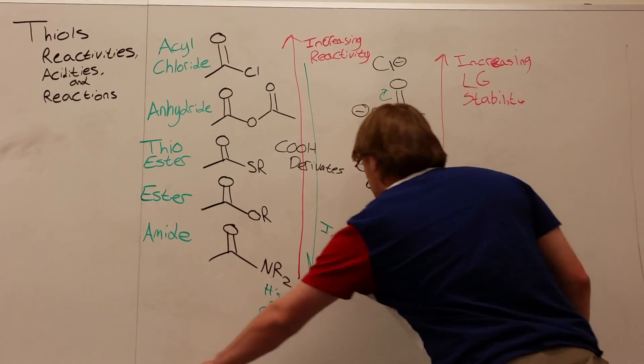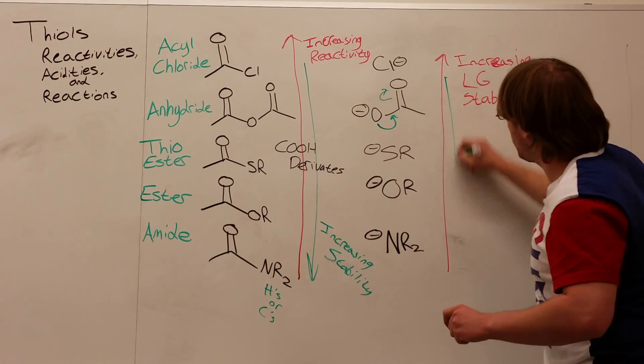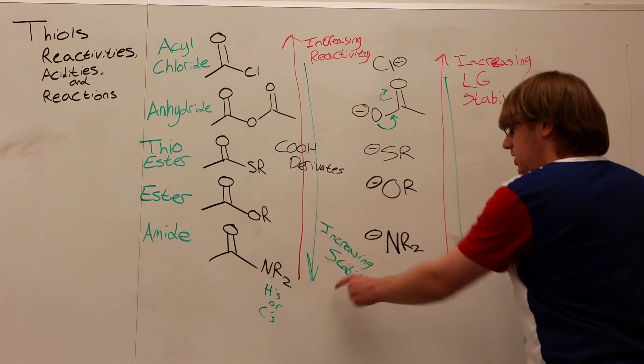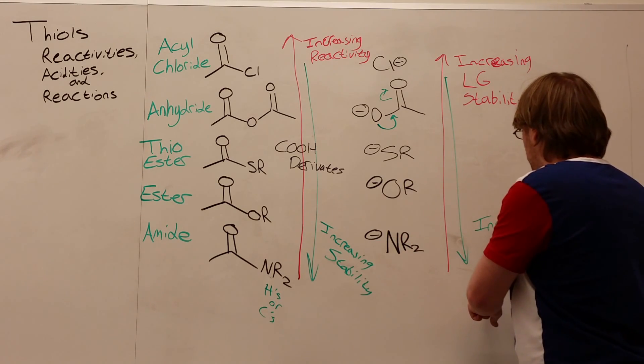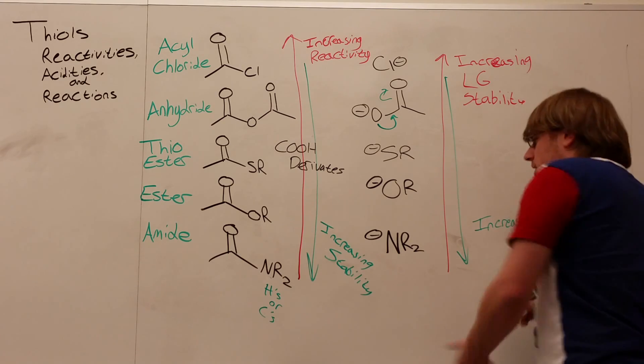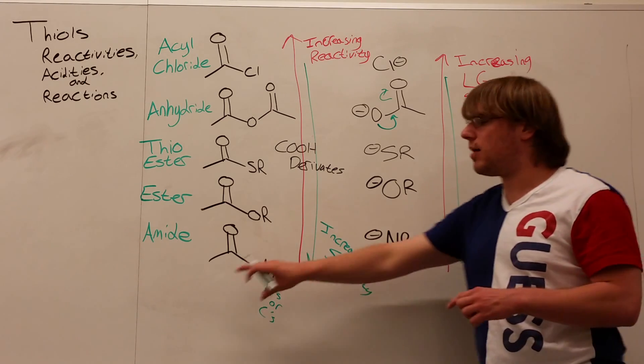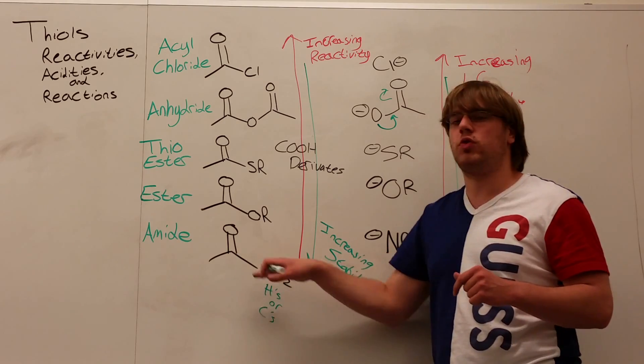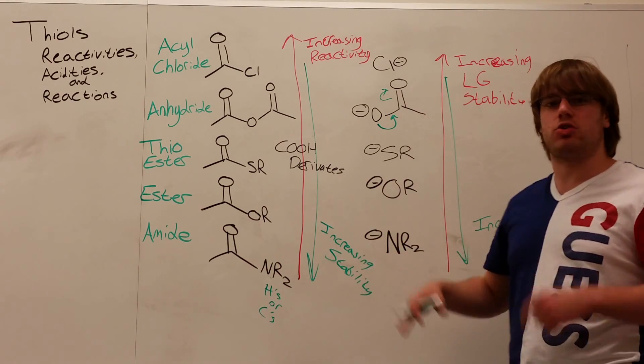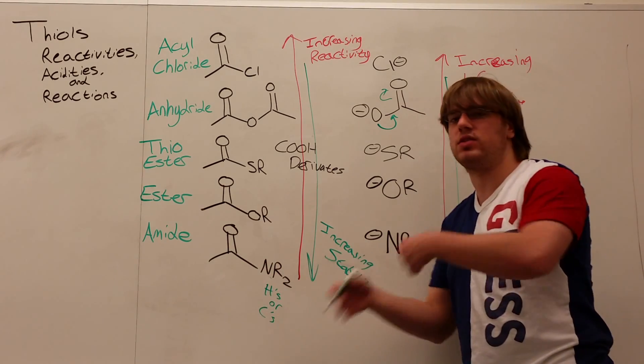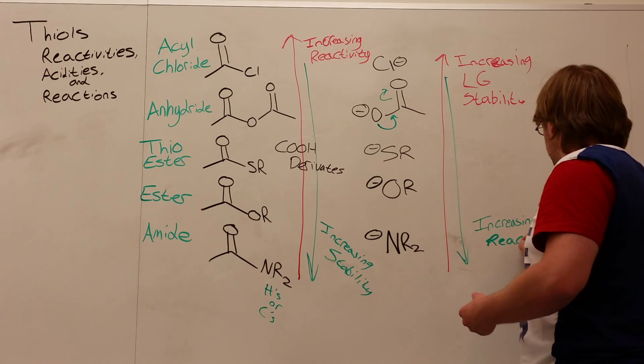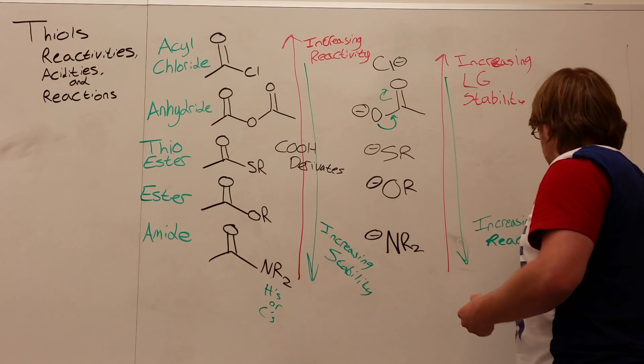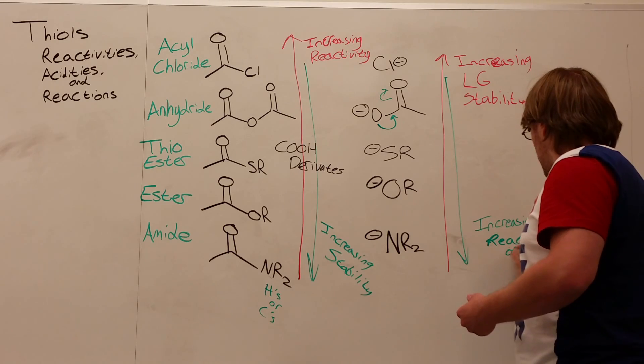And inversely, as we go down, that would mean increasing instability or increasing reactivity of the leaving group. You're not going to want to kick out a leaving group that becomes super reactive, which is why an amide is so stable. It doesn't want to release NR2 minus, because NR2 minus is super, super reactive. It's not stable. So, increasing reactivity of leaving group.